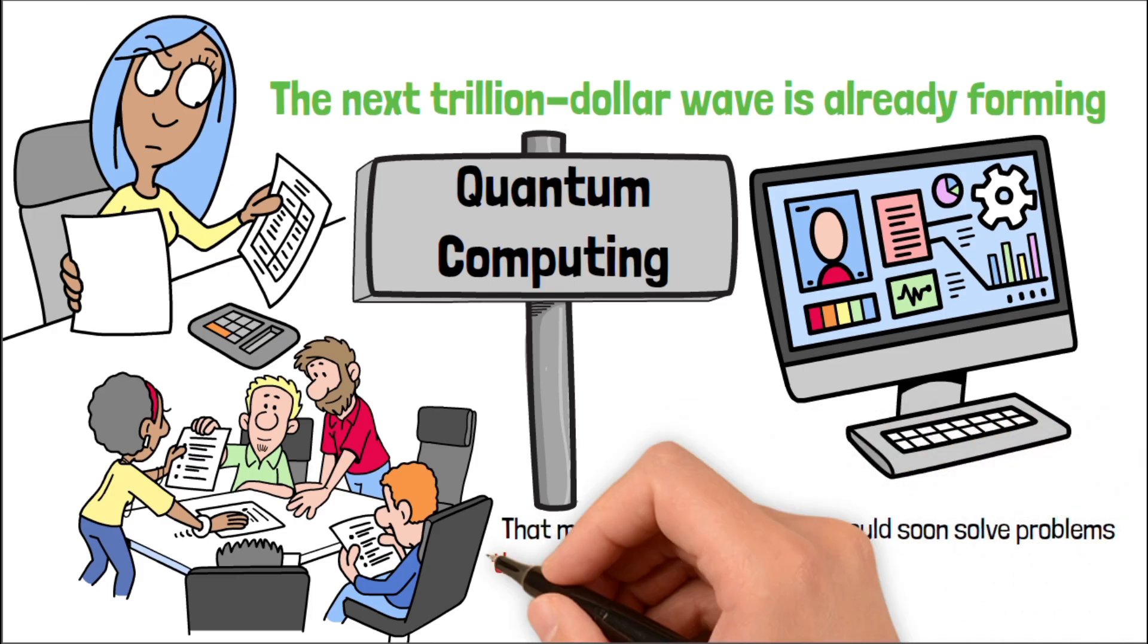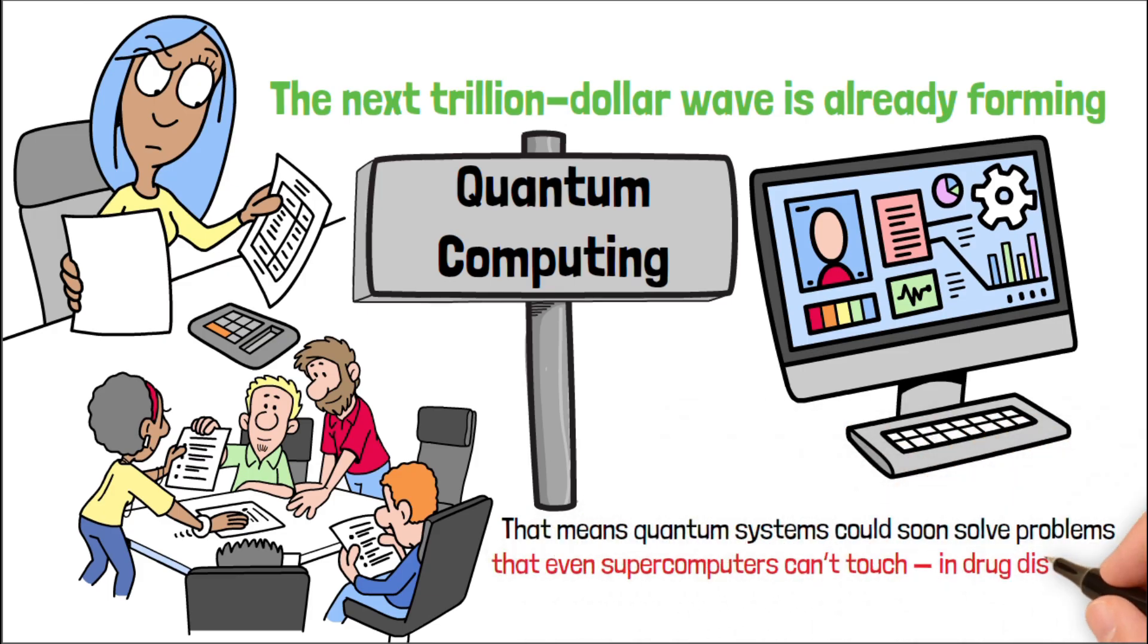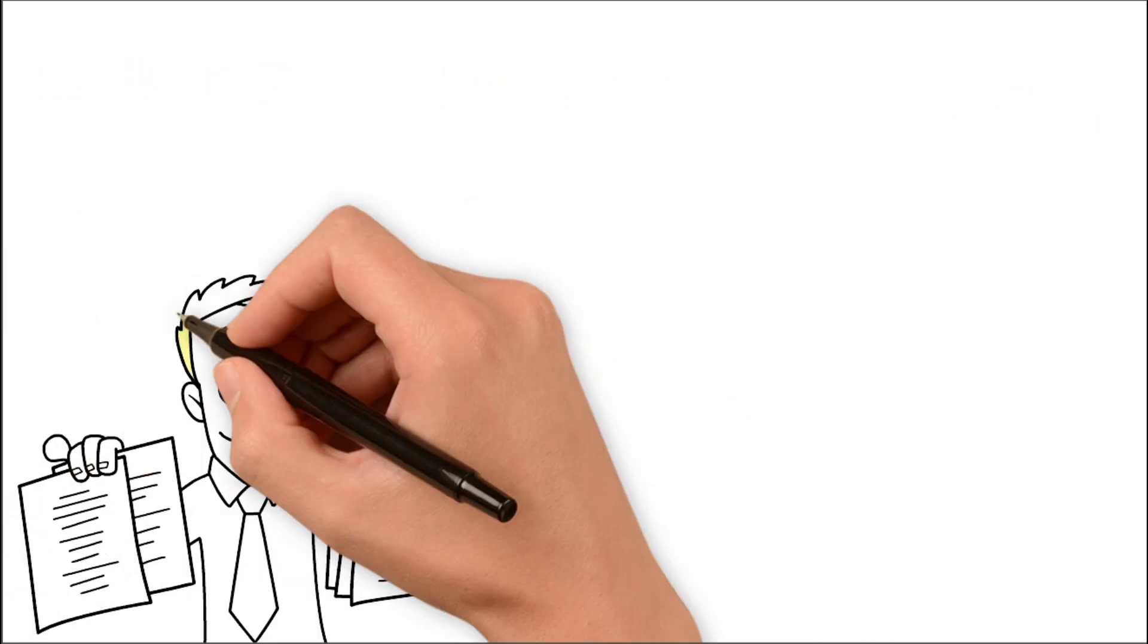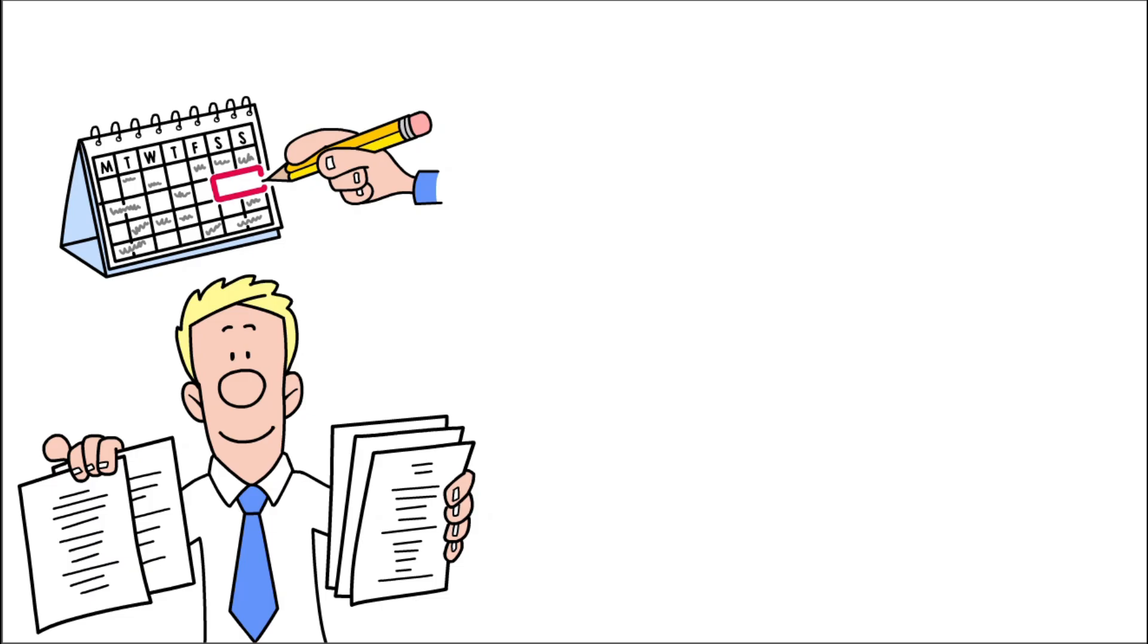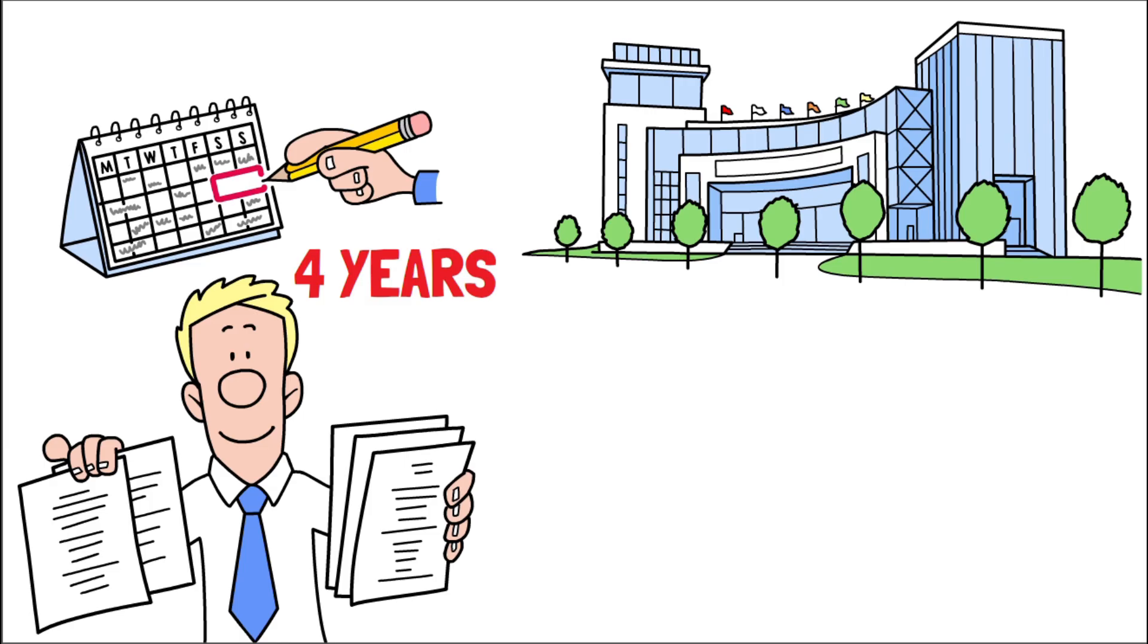That means quantum systems could soon solve problems that even supercomputers can't touch in drug discovery, finance, cybersecurity, and energy. So why should you care? Because if that timeline holds true, we have roughly four years to position ourselves before quantum computing dominates every sector that matters, and before Wall Street wakes up to it.